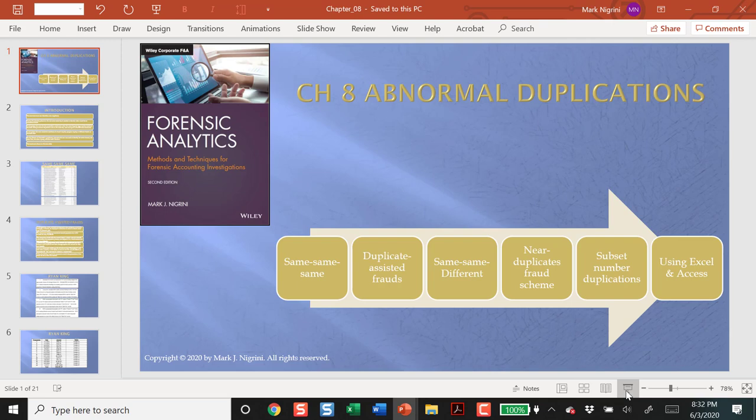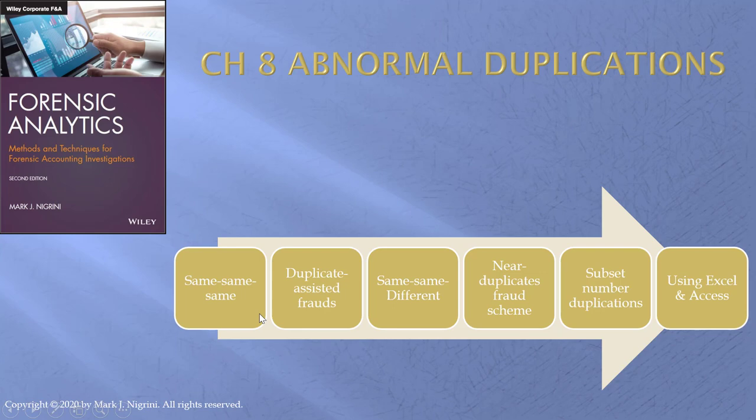We have three main tests here. We have same/same/same, which is a straight duplicate. We have same/same/different, which is a near duplicate. And then we have the subset number duplication, which is a formula.